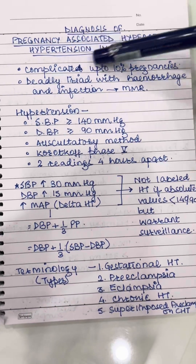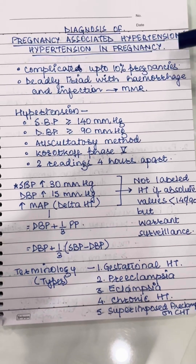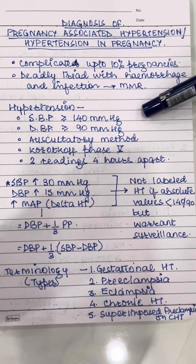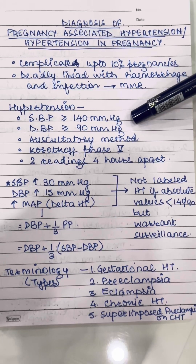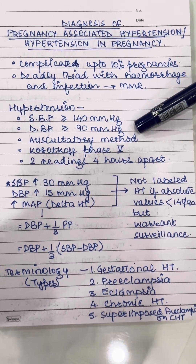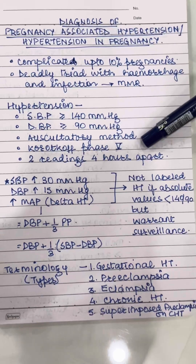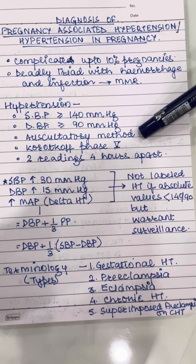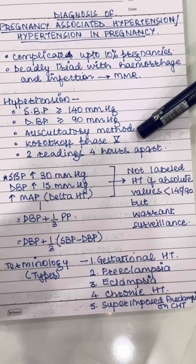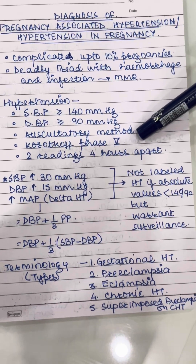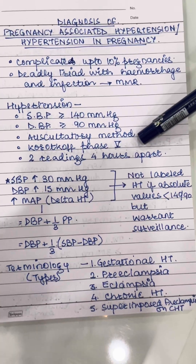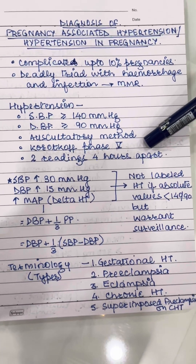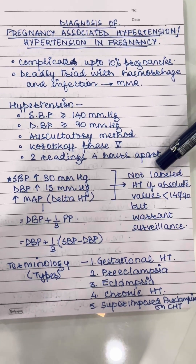What is hypertension in pregnancy? A reading of systolic BP more than 140 mmHg, a diastolic BP more than 90 mmHg, measured by auscultatory method using a stethoscope and sphygmomanometer with Korotkoff phase 5 to define diastolic blood pressure — that is, absence of sounds — with 2 readings taken 4 hours apart, is called hypertension in pregnancy.